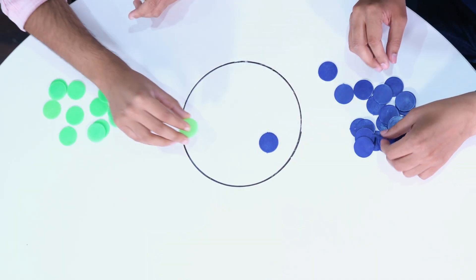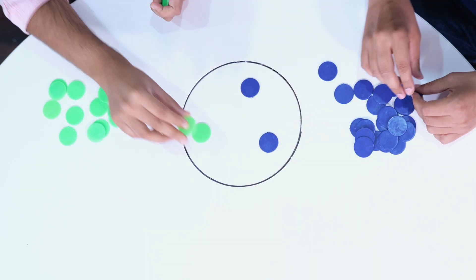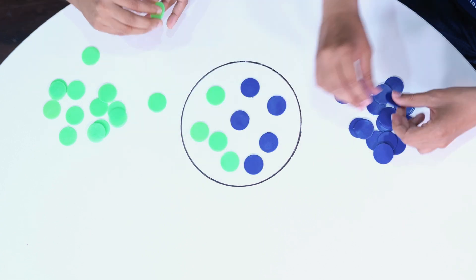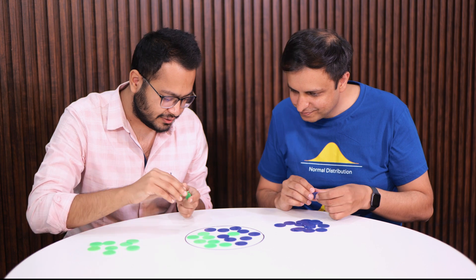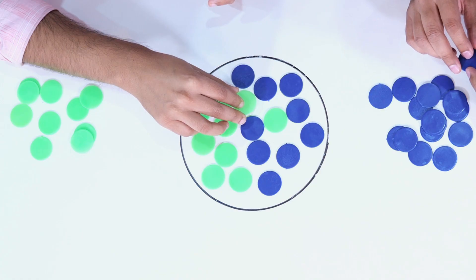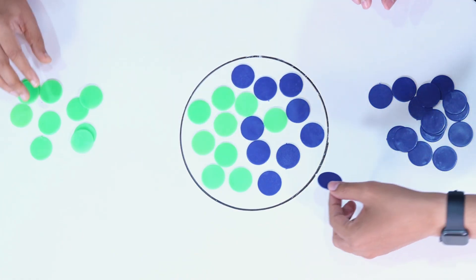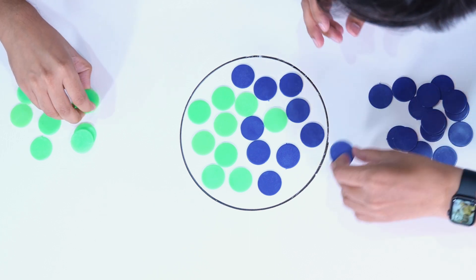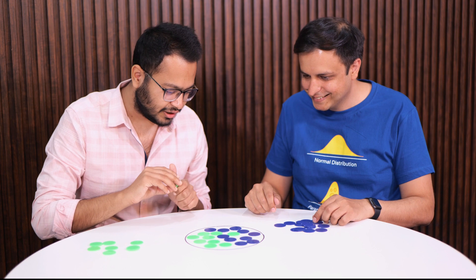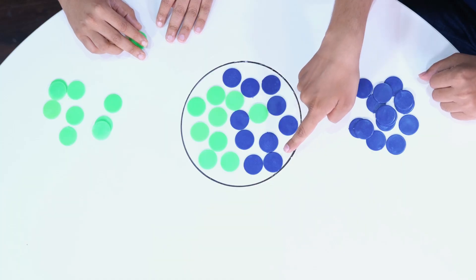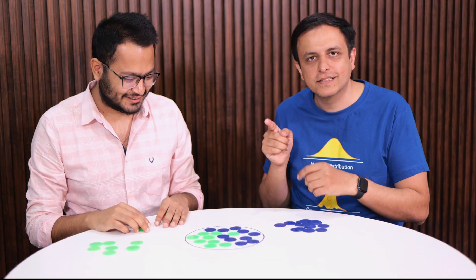So here I go. Okay, let me see if I have space. I think I can fit in a coin here. Yes. And can I fit in a coin here? Yeah, I think I can. Okay, I think I have run out of space. There's no more space.